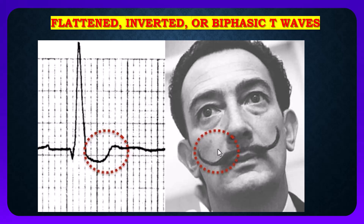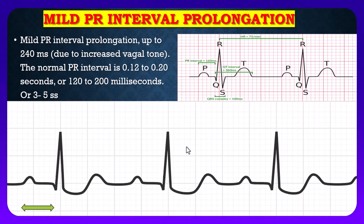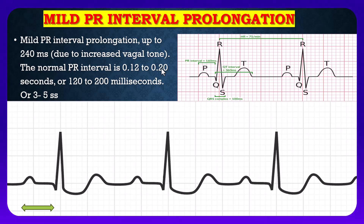The third sign or change on ECG is mild PR interval prolongation — up to 240 milliseconds — due to increased vagal tone. The normal PR interval is 0.12 to 0.20 seconds, or 120 to 200 milliseconds, or three to five small squares. Here you can see the PR interval, which starts from the beginning of the P wave to the beginning of the R wave. This interval is normally three to five small squares, but here if you count these small squares there are six, so there is a bit of prolongation of the PR interval.